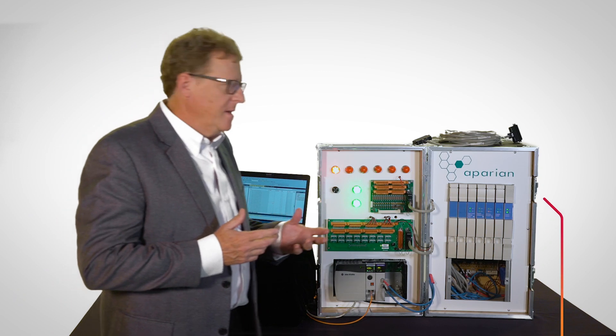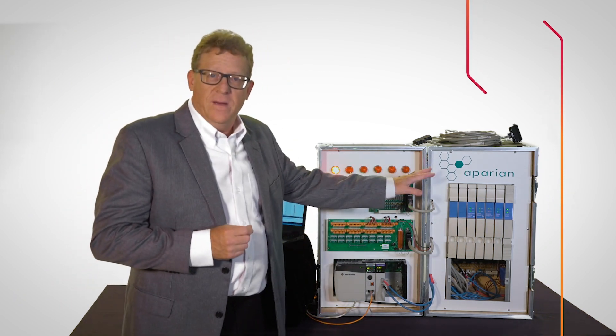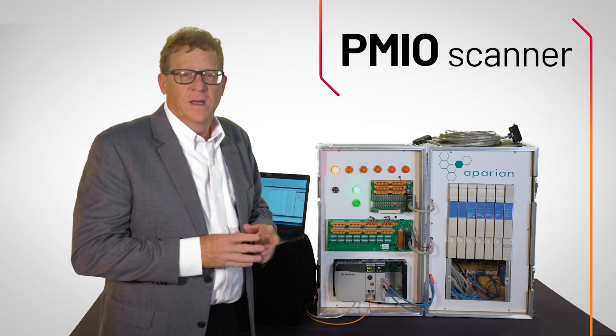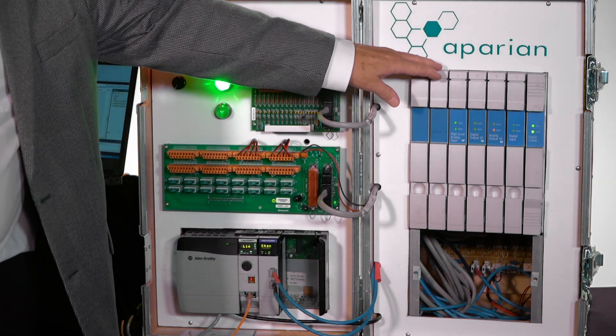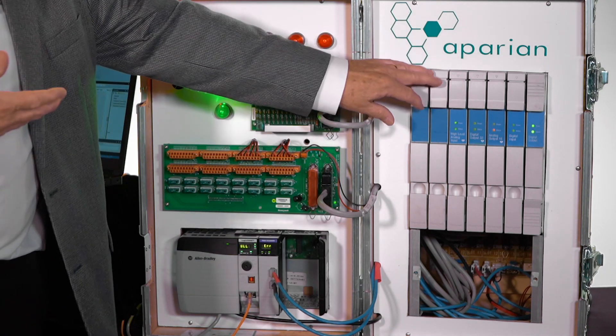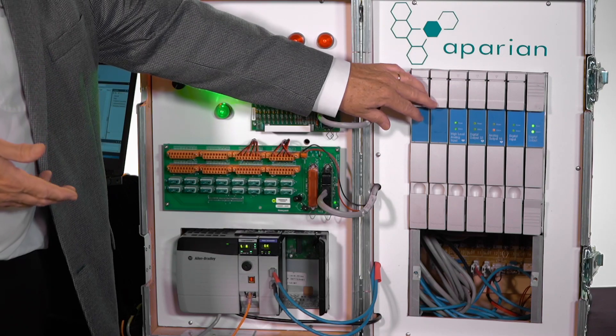What we're showing here is a demonstration of the Apparian PMIO scanner. On the right, we have the Process Manager IOP cards powered up and as you can see, running without the HPM controller.